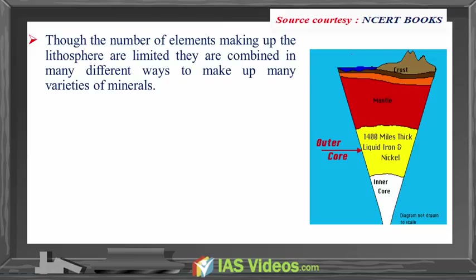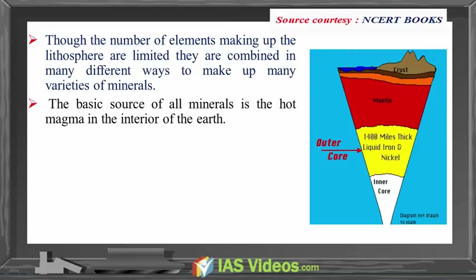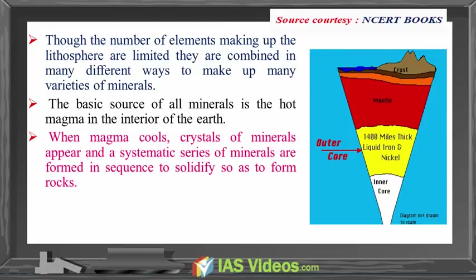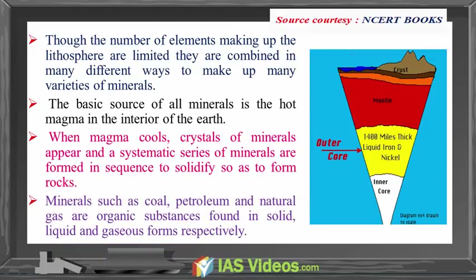Though the number of elements making up the lithosphere are limited, they are combined in many different ways to make up many varieties of minerals. The basic source of all minerals is the hot magma in the interior of the earth. When magma cools, crystals of minerals appear and a systematic series of minerals are formed in sequence to solidify so as to form rocks. Minerals such as coal, petroleum and natural gas are organic substances found in solid, liquid and gaseous forms respectively.